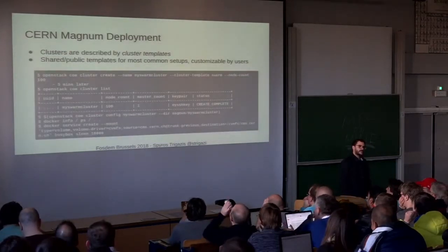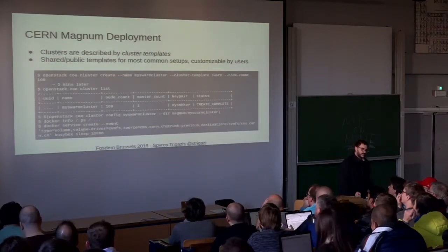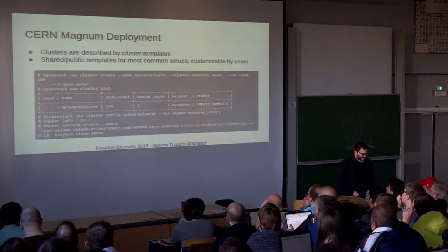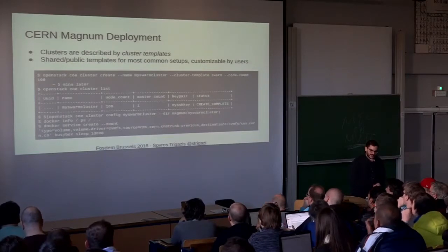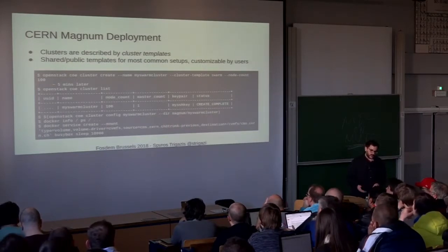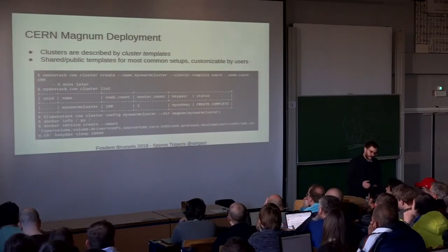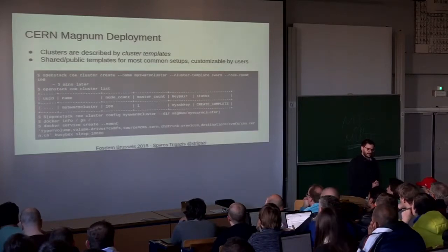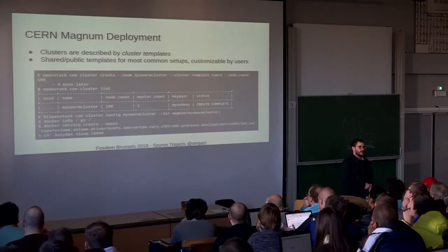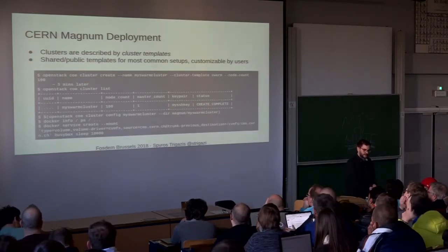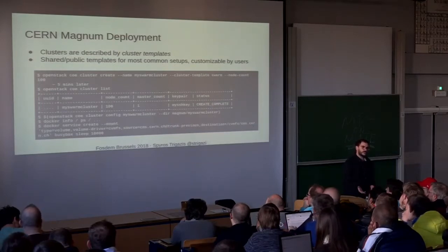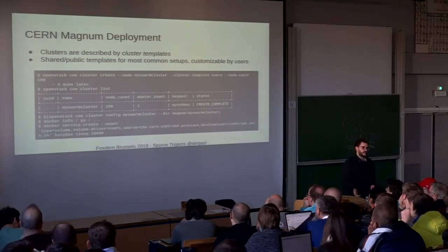The container service is based on a project called Magnum, which I am the project lead for. This is a simple workflow: in the first command you just create a cluster — in this case a Docker Swarm cluster with 100 nodes — and you wait some minutes. You wait for the cluster to complete, then get the credentials to talk to the daemon on the master nodes and orchestrate your containers. After two commands, you start talking to the cluster daemon directly — no OpenStack anymore.